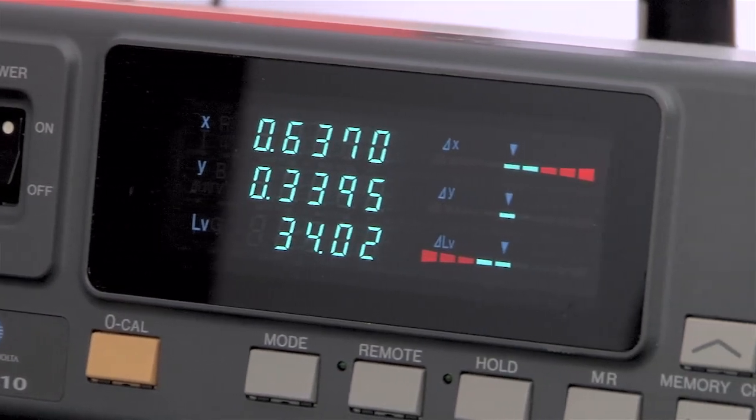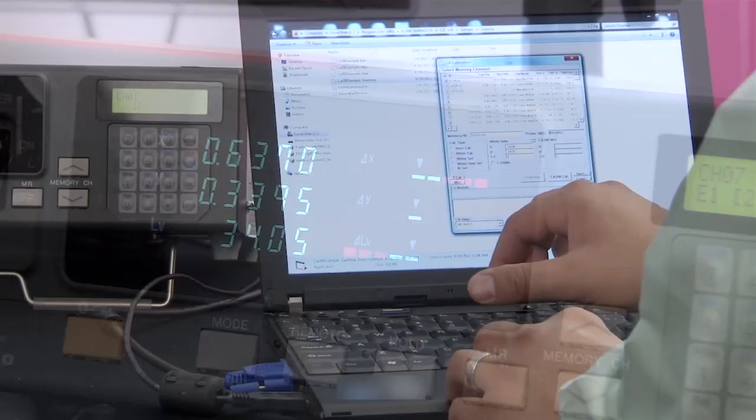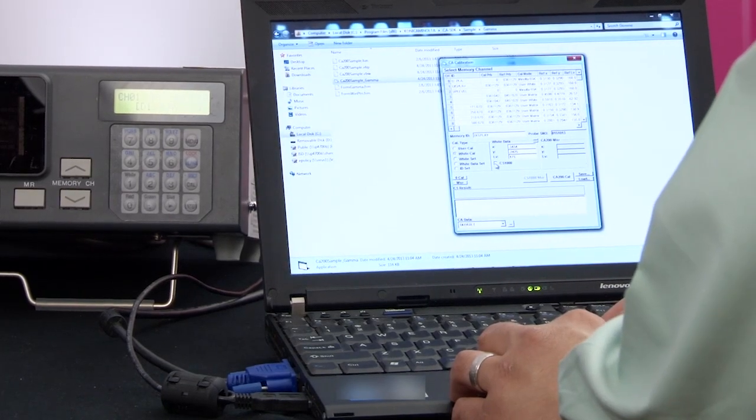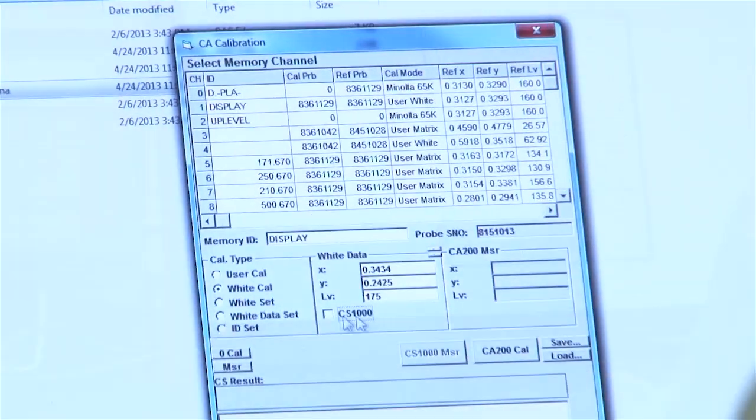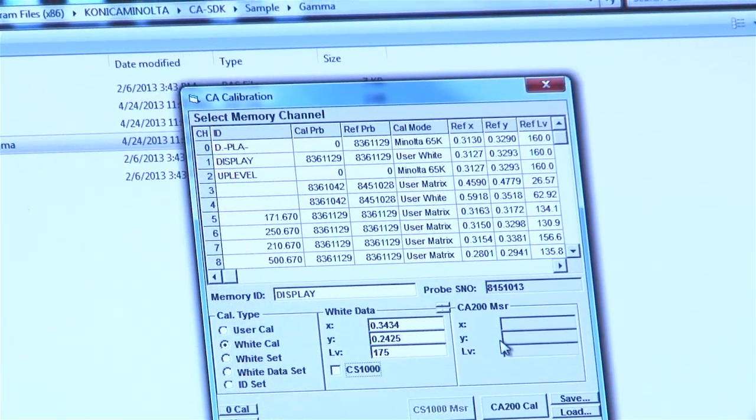The standard software development kit helps create software according to production line needs. Data is easily collected and seamlessly integrated into the production line process.